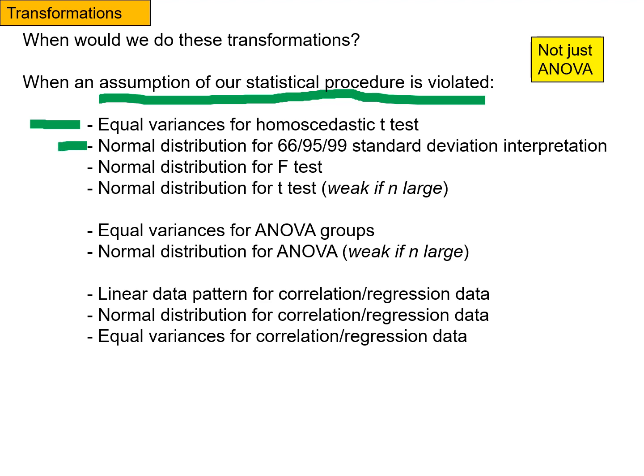If we wanted to use this 66, 95, 99 stuff from the normal distribution to interpret standard deviations, but our data was not normally distributed, we could use a transformation to turn it into a distribution that is normally distributed.